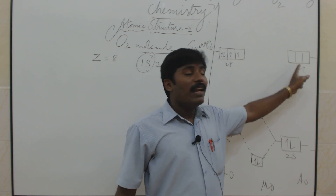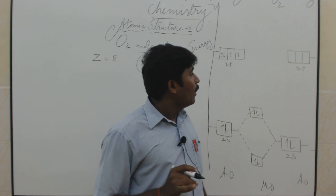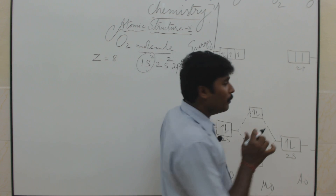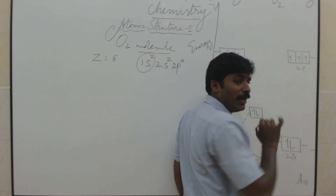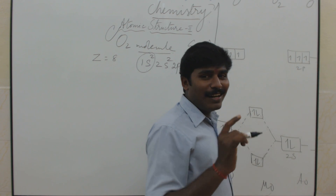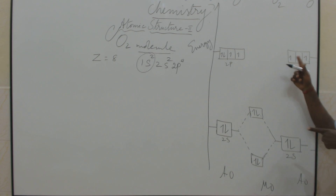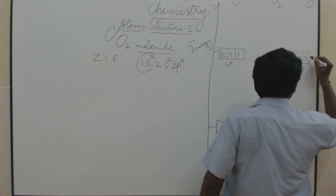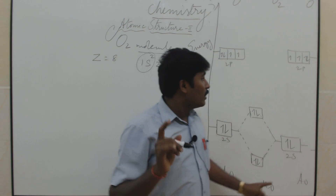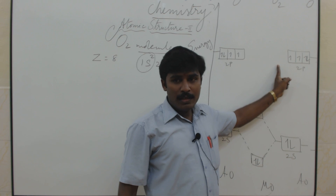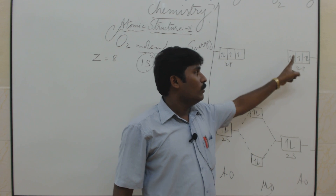Here is where many students make a mistake — how to fill 4 electrons. Filling 1, 2, 3, 4 straight down is wrong because energy increases on this side. The orbitals are ordered x, y, z. So you fill the first electron in x, the second electron in y — not continuing down from z. So 2px has 2 electrons, 2py has 1 electron, and 2pz has 1 electron.